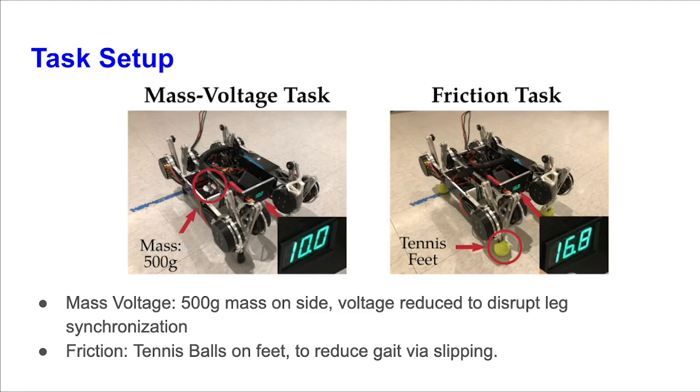Now, we apply our techniques to the real robot. In our real-world Minotaur, we designed two experiments. One is the mass voltage task, where a 500g mass is placed on its side, with the battery voltage lowered to reduce leg synchronization. This combination is to mimic a realistic situation when the robot is carrying a load under low battery. The other is the friction task, where all of its rubber feet are replaced with tennis balls to reduce friction, which hinders its ability to walk. This is to mimic a situation when the robot is walking on a low-friction surface, such as ice.